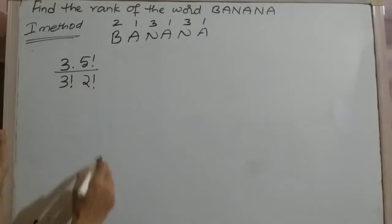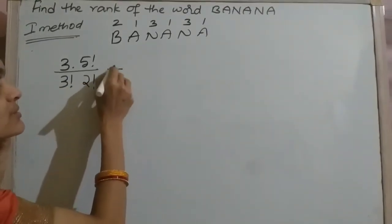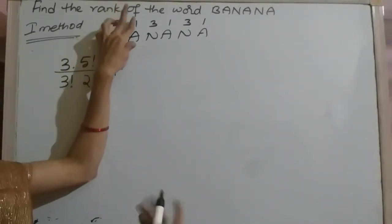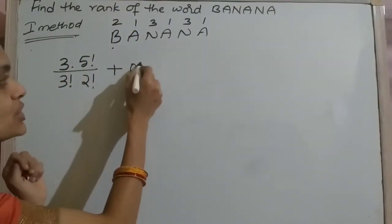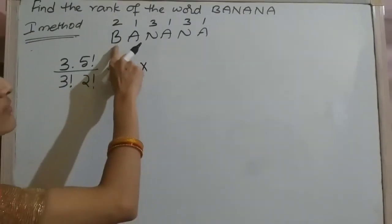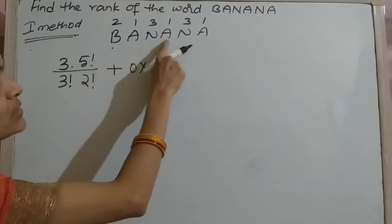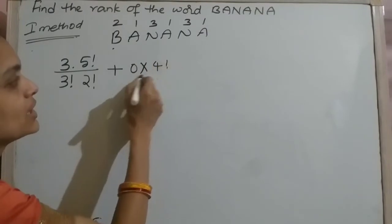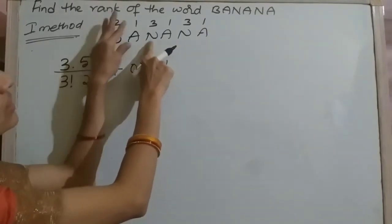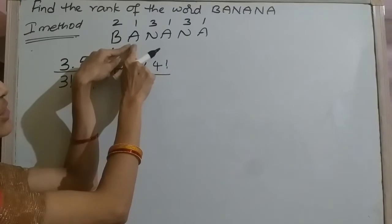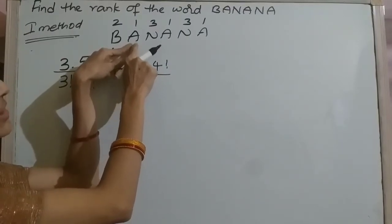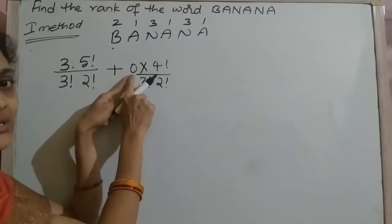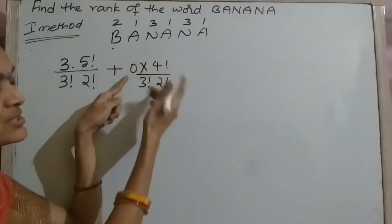Then go to A. A has rank one — is there any positive integer before one? No. So that is zero. How many digits are left? Four, so four factorial. In the denominator, write the repetitions: three A's in 3! and two N's in 2!. Zero into anything is zero, so this term doesn't count.